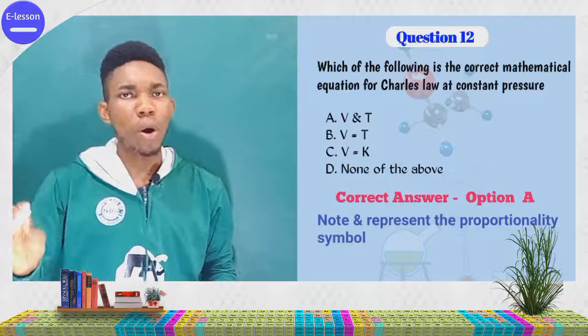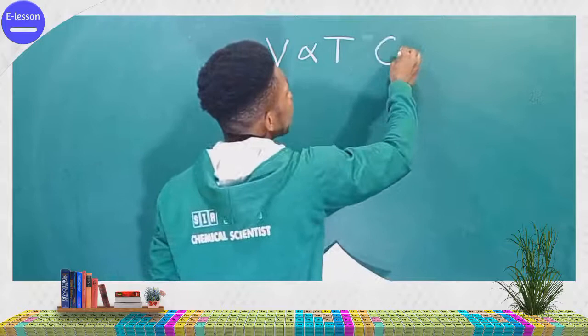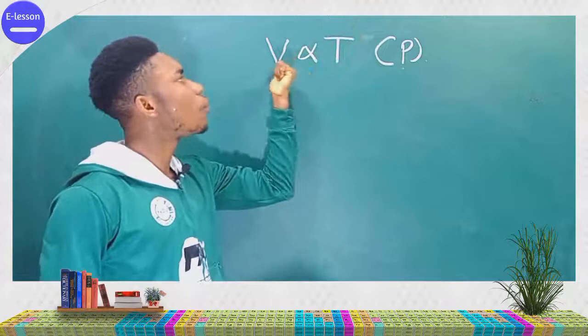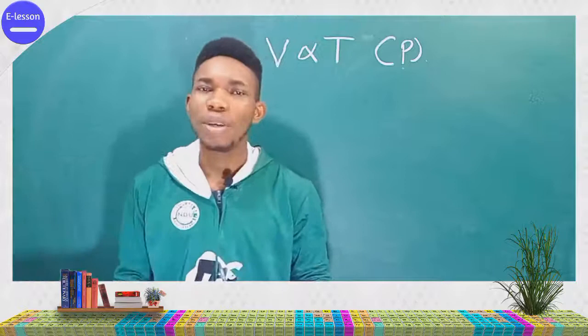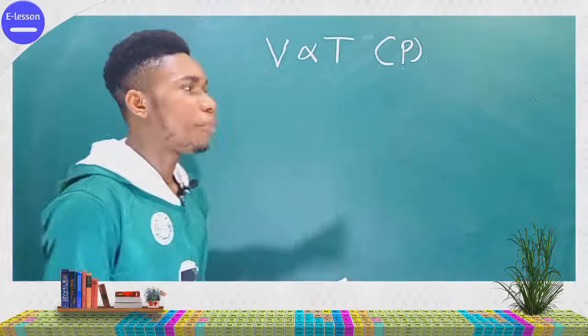At constant pressure, if the pressure is held constant, an increase in volume leads to an increase in temperature — that is why we say they are directly proportional. Just as if two quantities are directly proportional, when one increases the other increases. So the volume is directly proportional to the temperature at constant pressure — that is the statement of Charles's law.